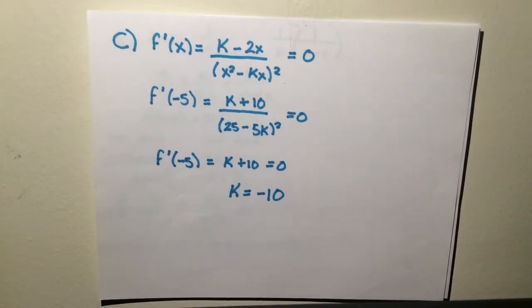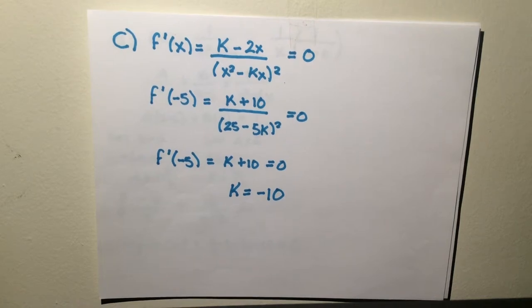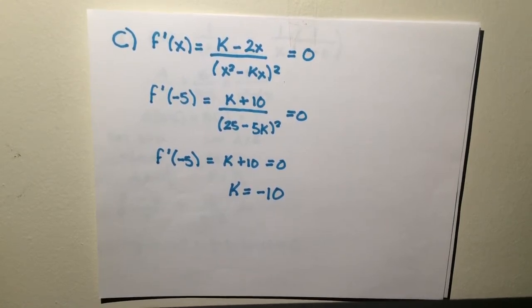For part c, it says find the value of k for which f has a critical point at x equals negative 5. For this problem, you need to understand what a critical point is. A critical point is when f prime is equal to 0.